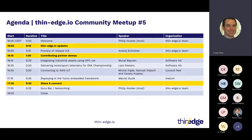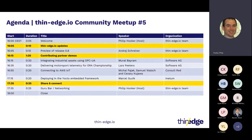We'll kick off with a brief preview of release 0.8 from the Thin-Edge.io team, then immediately move into technical sessions from contributing partners covering: integrating industrial assets using OPC UA, delivering motorsport telemetry for the ERA championship, connecting to AWS IoT, and deploying in the OCTO embedded framework. Time allowing, all sessions will be followed by a short Q&A, rolling on to our open guru bar and networking session at the end.